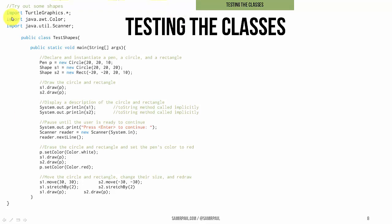Here we can see in class test shapes, we've imported turtle graphics, color, and scanner. We start by instantiating a pen and making a circle and a rectangle, both of which are pointed to by shape variables. In general, we prefer to use an interface type if we can. Then we draw our shape and our rectangle, print the string representations to the console, and wait for the user to hit enter.